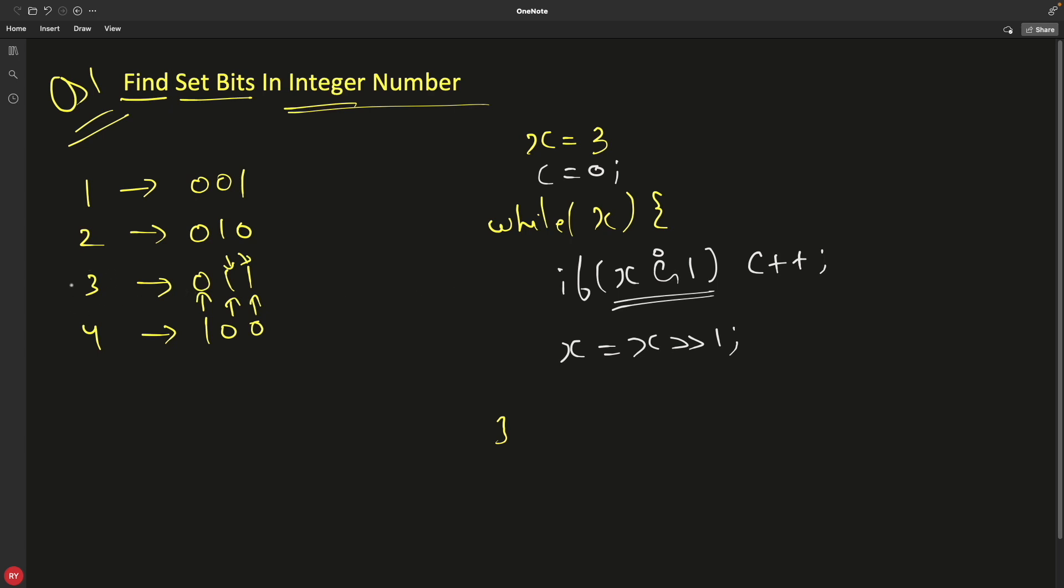So see, your 3 is odd. So 0, 1, 1. Now, if you will and this with, let's say I'm writing it like this, 0, 0, 1. The and would be 0, 0, 1 again. So this tells that this particular number is set. Then only you can have a true result. Meaning the answer of this can be true only when this first position is having 1.